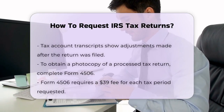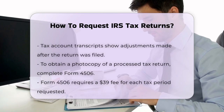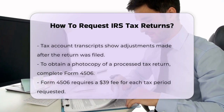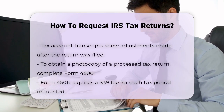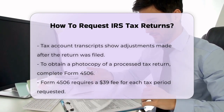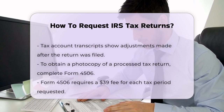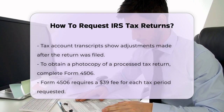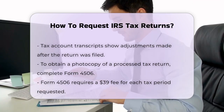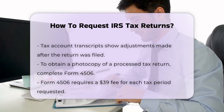If you need an actual photocopy of your previously processed tax return, including all attachments, you'll need to complete Form 4506, Request for Copy of Tax Return. This form needs to be mailed to the IRS address listed on the form for your area. There's a $39 fee for each tax period requested, and copies are generally available for the current and past six years.